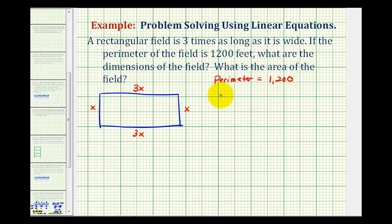So we can write the equation 2 times x plus 2 times 3x must equal 1,200. Of course we could just sum all of these, but we do have two x's and two 3x's.